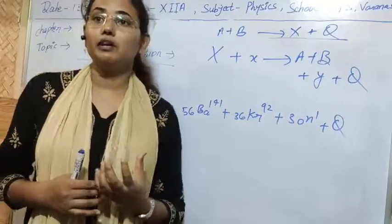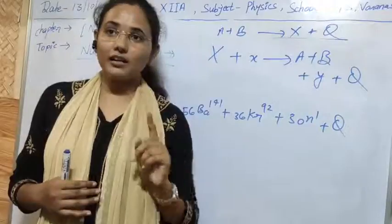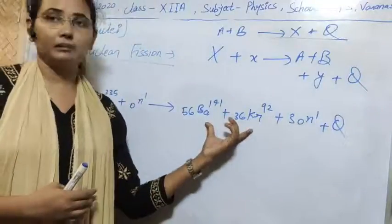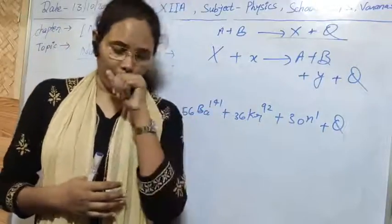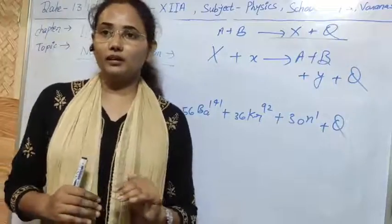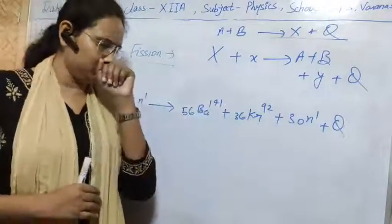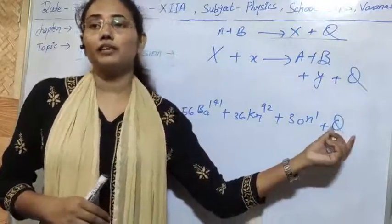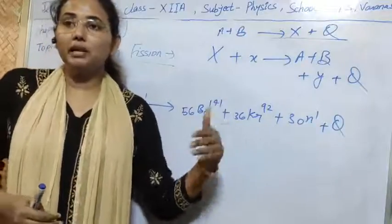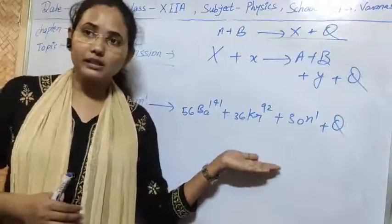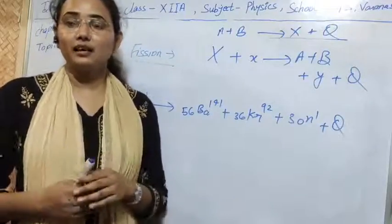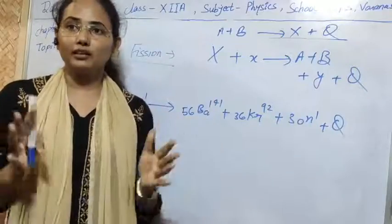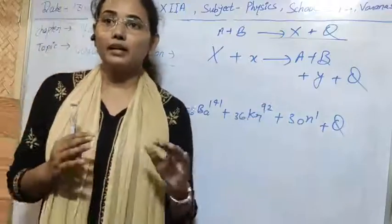A number of neutrons will be emitted and will again cause disintegration in uranium — a chain reaction will be started which will never end until all the uranium fuel is consumed. If there are a hundred uranium atoms and the reaction starts from one, it will continually go on until all hundred uranium atoms are disintegrated into barium and krypton.